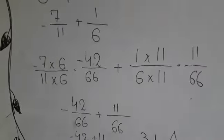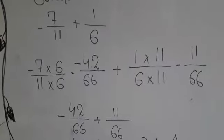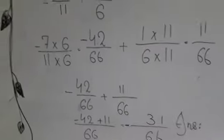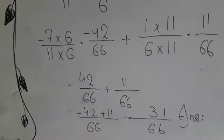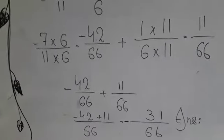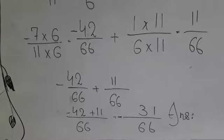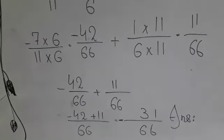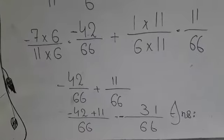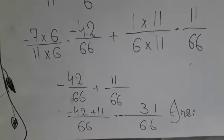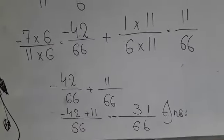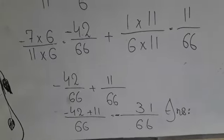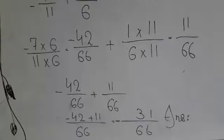So this is minus 42 over 66 plus 11 over 66. Now the denominator is same, so write down the denominator at once. Minus 42 plus 11. Minus plus, what will it be? It will be minus. From 42 when you minus 11, it equals 31. Minus 31 over 66 is our answer.